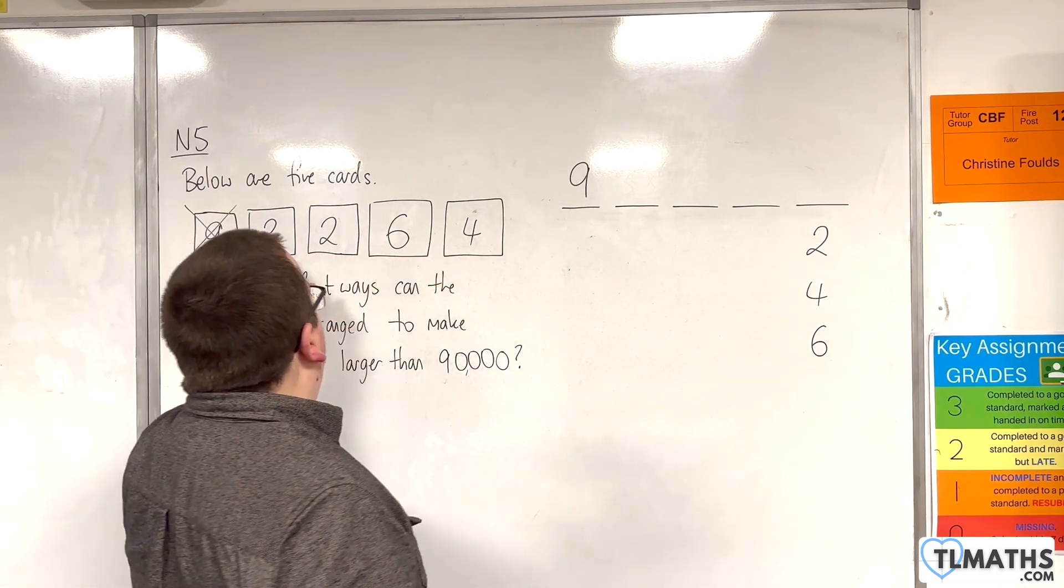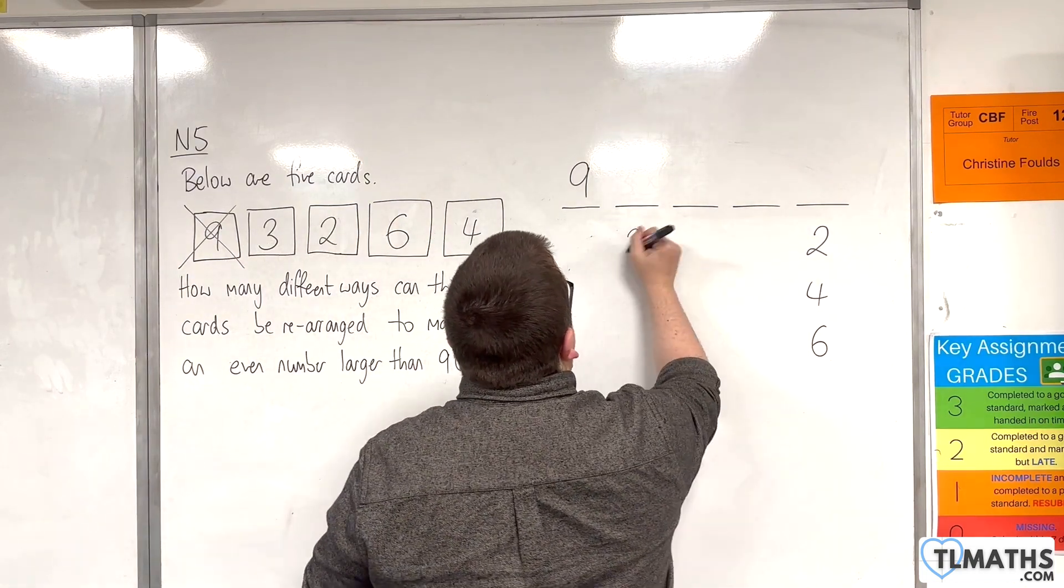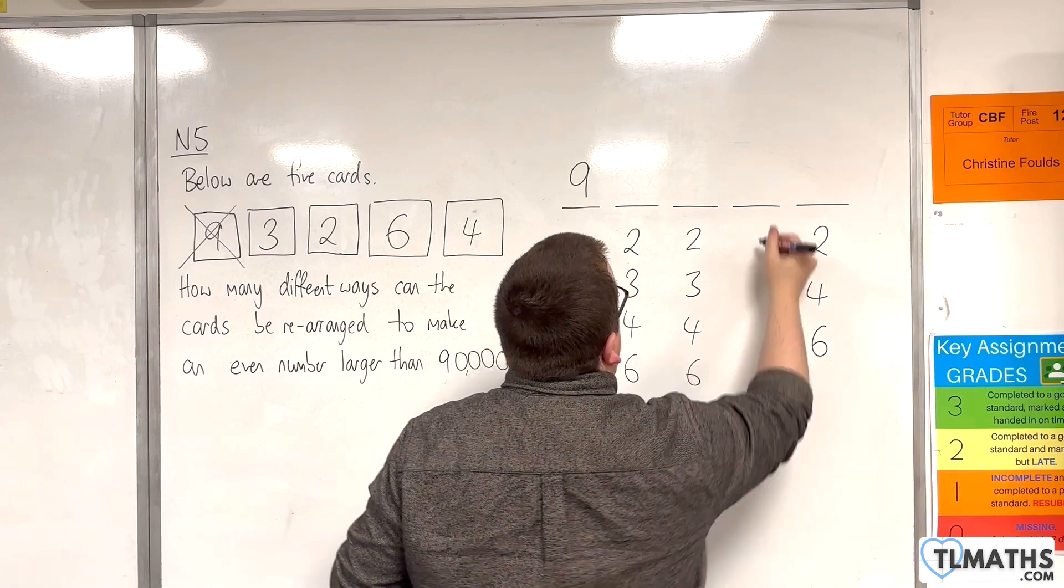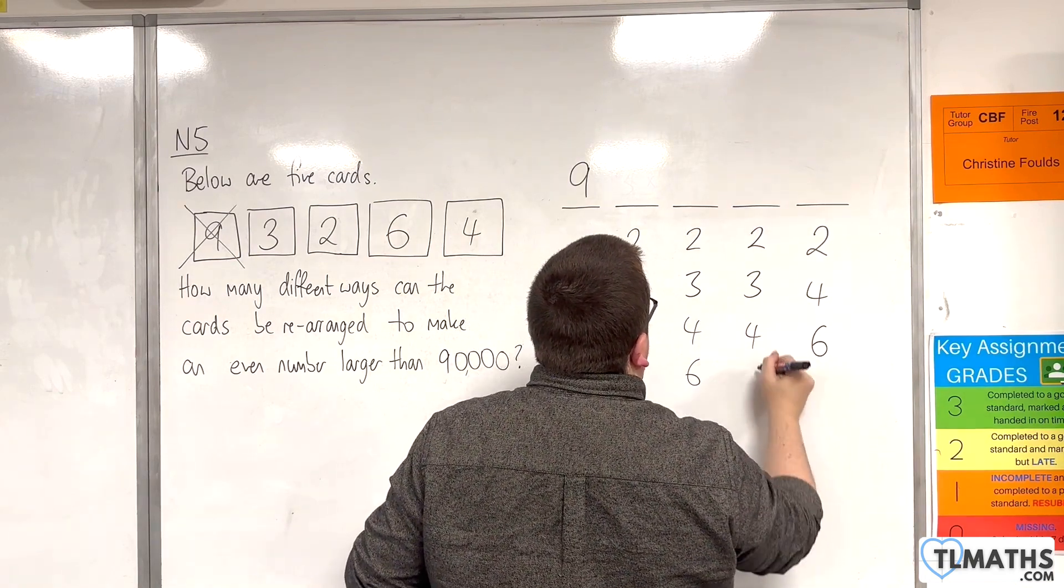So 2, 3, 4, or 6 for each of these middle positions.